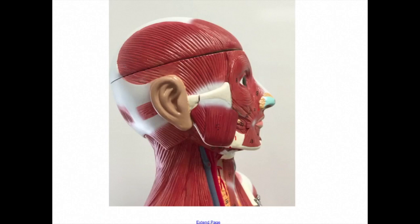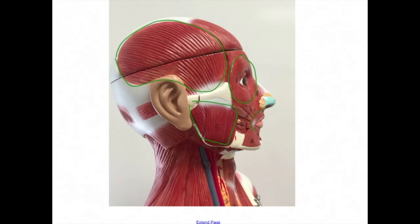Here we get a better view of the temporalis. The origin is the temporal fossa. The insertion is the coronoid process of the mandible. The action is to elevate the jaw and retract the mandible. From this angle we also get a better view of the masseter, a side view of the Orbicularis Oculi and Orbicularis Oris.